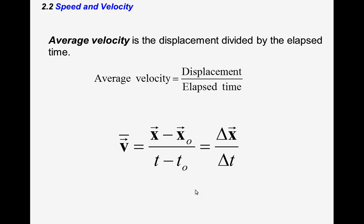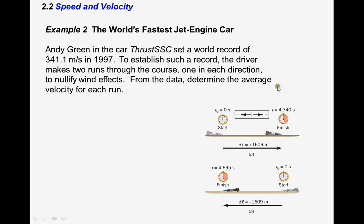Speed and velocity are two different concepts. Displacement is a vector quantity — a change in position can be positive or negative. For kinematics in one dimension, we work along either the x-axis or the y-axis, where positive y is up and negative y is down. The displacement could be positive or negative, while time is a scalar quantity.